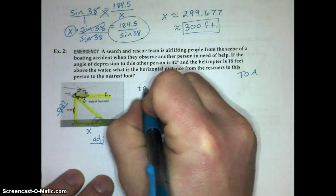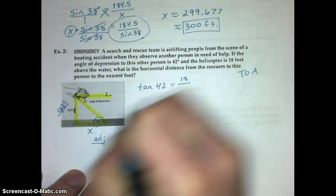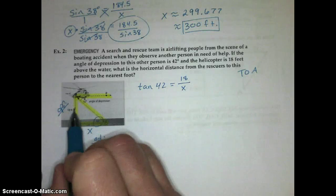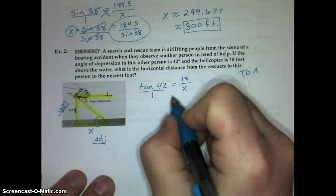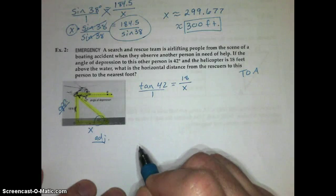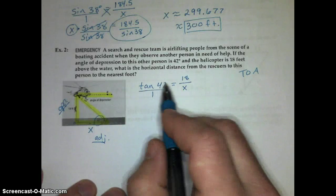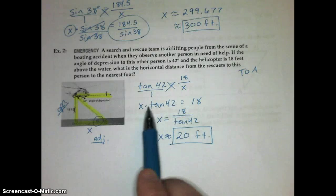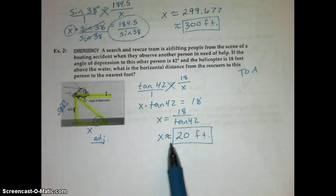I'm going to use my tangent ratio. I'm going to set up this as the tangent of 42 degrees equals the opposite leg of 18 over the adjacent leg, which is what I'm looking for. The distance horizontally from the rescuer to this other person in the water to the nearest foot. We set up our proportion. When you cross multiply, we do X times the tangent of 42 equals 1 times 18. And then we divide both sides by tangent of 42, so X is equal to 18 over tangent of 42. And we divide those out in our calculator, and we get X is about 20 feet.